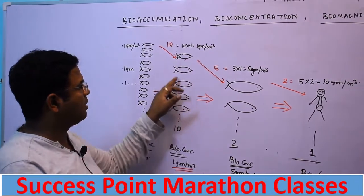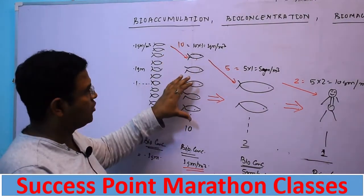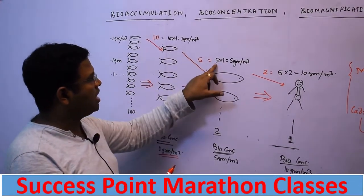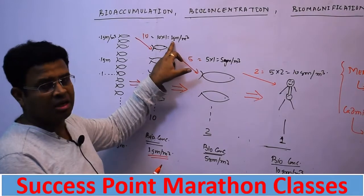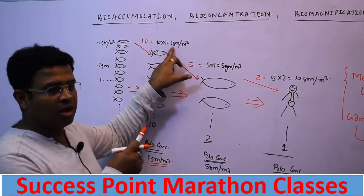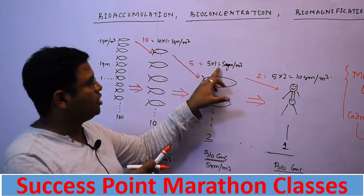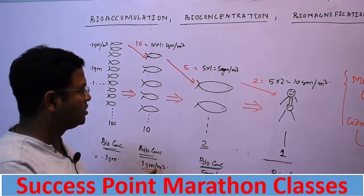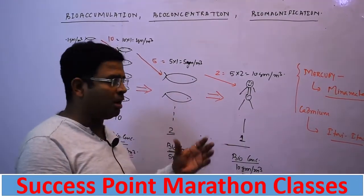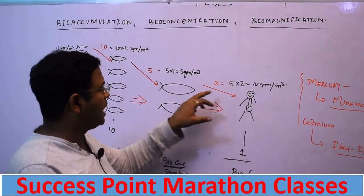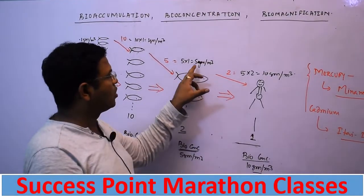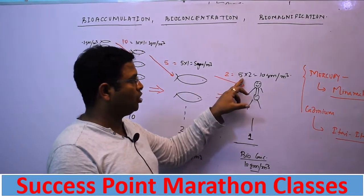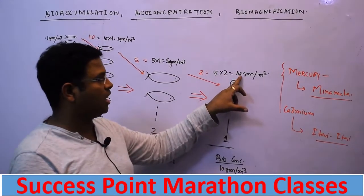Further, these smaller fish are eaten by a much bigger fish, which eats five such fish. Five into 1 gram gives 5 gram per meter cube in that bigger fish. This bigger fish is then eaten by a human being — if the human eats two such fish, then 5 gram times 2 equals 10 gram per meter cube.